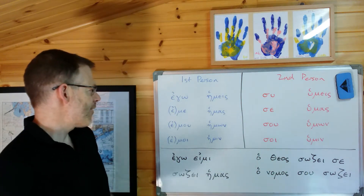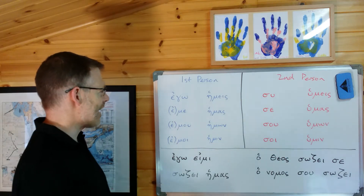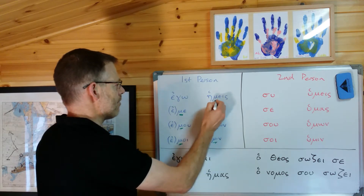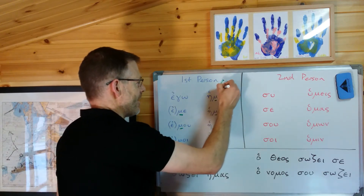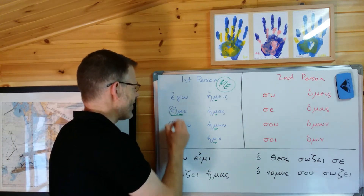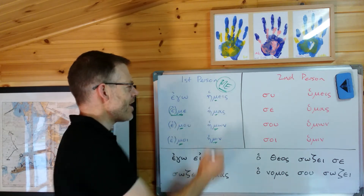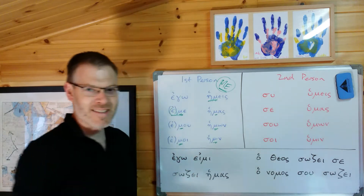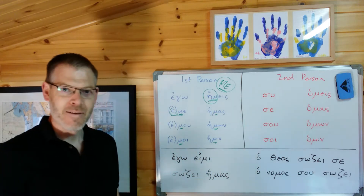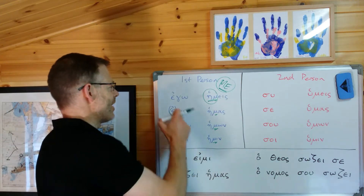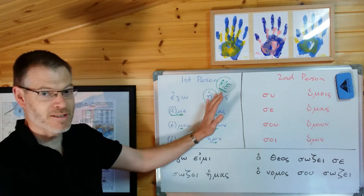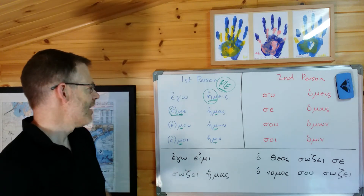A couple of notes about remembering these. First, notice that there are some fairly obvious patterns in the first person. You've got the mu - mu, mu, mu - which is easy to remember because it's all about me, especially coupled with the epsilon. So the mu and the epsilon is all about me, first person. And in the plural, it's the long e, the long e - again, it's me, me. So that'll help you to remember that ego, eme, emu, emoy, hēmeis, hēmas, hēmōn, hēmin is the first person pronoun, distinct from the second person.